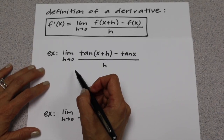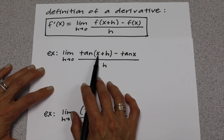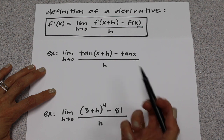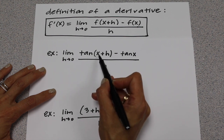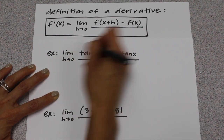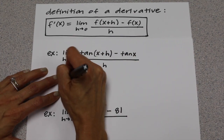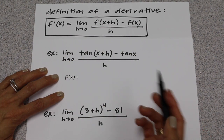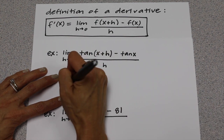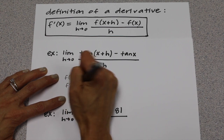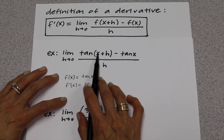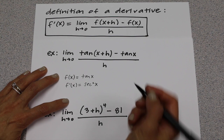In another example, we have the limit as h goes to 0 of tangent of x plus h, minus tangent of x, all over h. This one is different from the previous two because it actually says x plus h — nothing has been plugged in for x. So this whole thing is equal to f prime of x. First, identify f: the function is tangent of x. Then take the derivative: the derivative of tangent is secant squared. Because nothing is plugged in for x, the final answer is just secant squared of x.